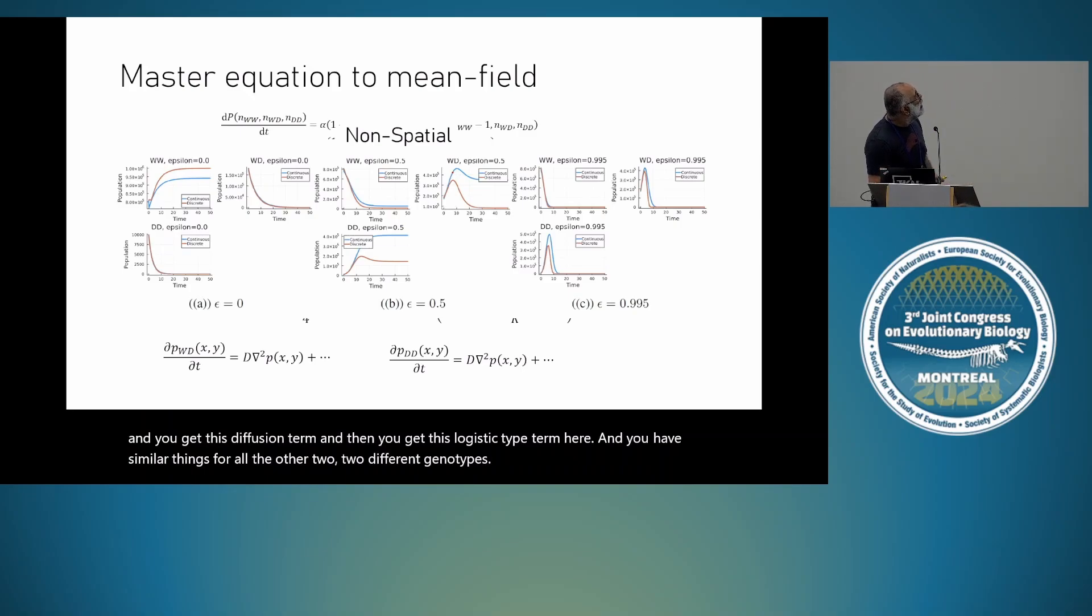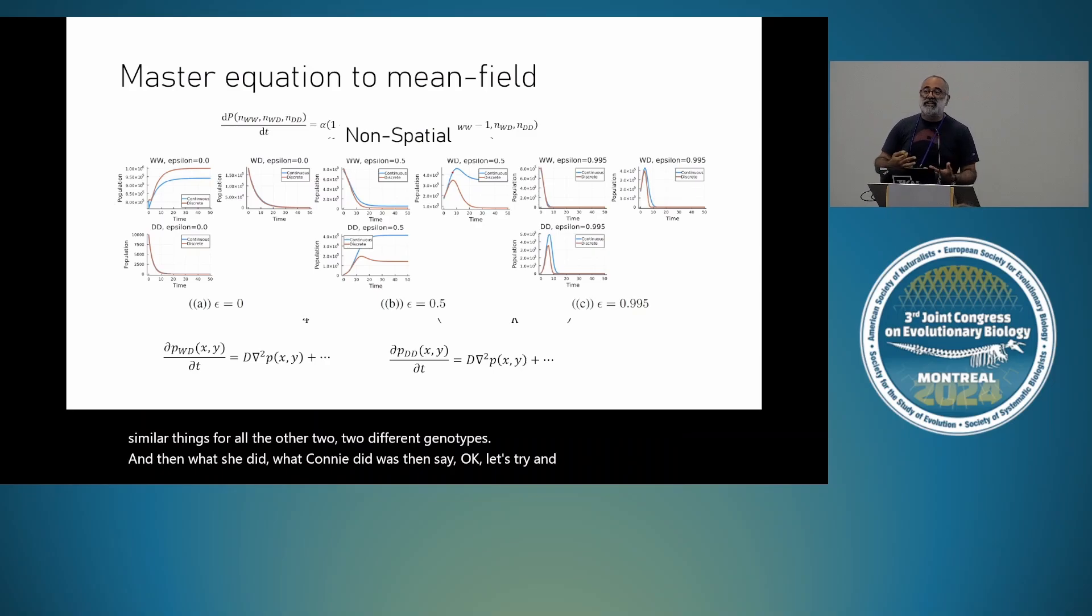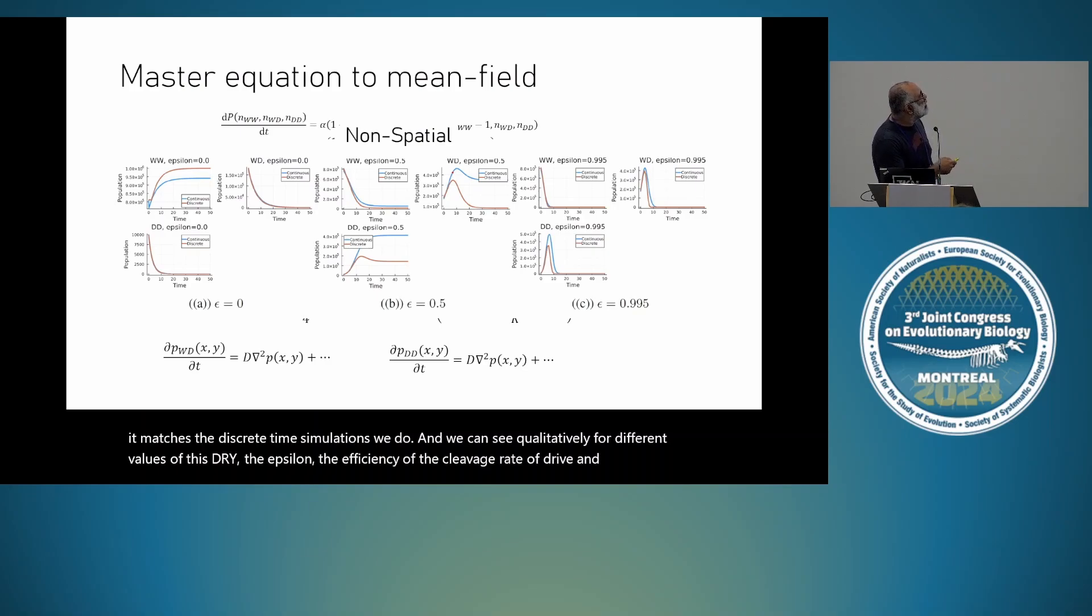So you end up with ODEs or PDEs in space. And then you want to calculate the fluctuations around that mean field behavior. And that gives you the power spectrum of the fluctuations. I'm not going to go into the details, but just to show you that once you do this for this particular set of reactions, you get this PDE. So you can try to write down a PDE for drive. This is a bit more first-principled way of doing it. You start from this master equation, and you write down this PDE, and you get this diffusion term, and then you get this logistic type term here. And you have similar things for all the other two different genotypes. And then what Connie did was then say, let's try and match. Let's just see if it matches the discrete time simulation we do. And we can see qualitatively for different values of this drive, the epsilon, the efficiency of the cleavage rate of drive, that qualitatively we get a reasonably good agreement between the two. We shouldn't expect it to be quantitative, but the qualitative dynamics to be correct, at least.